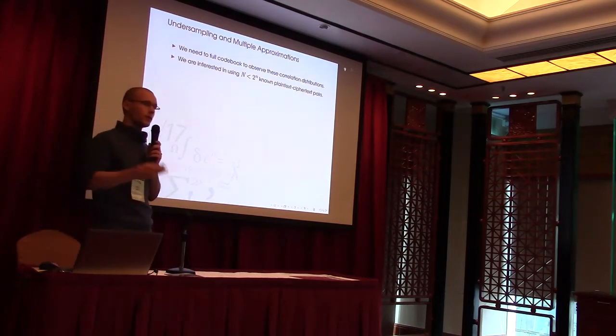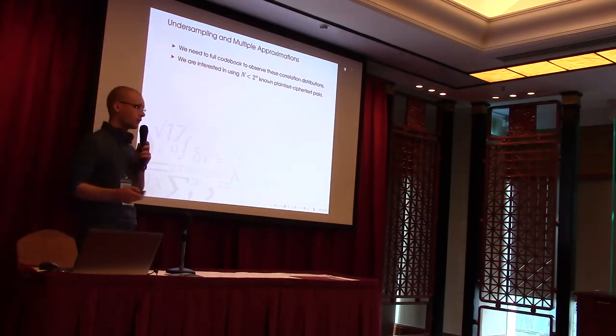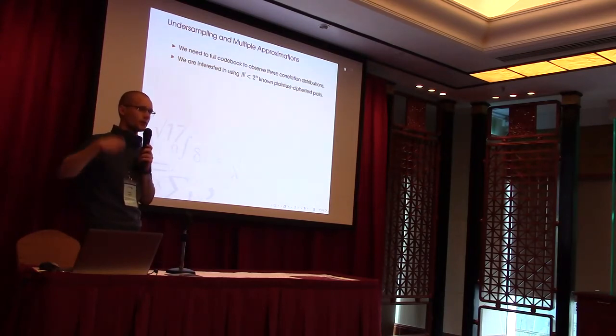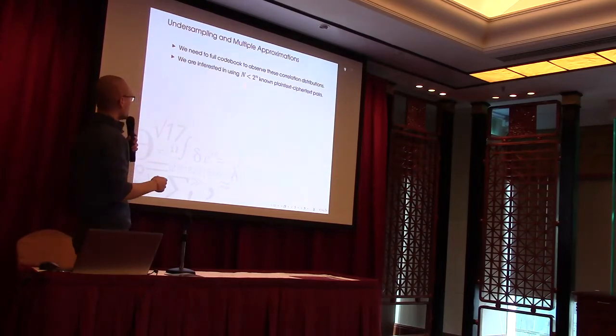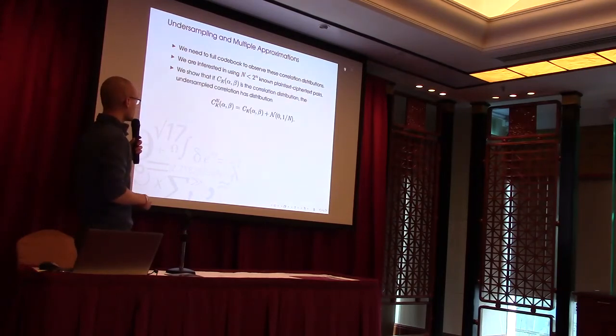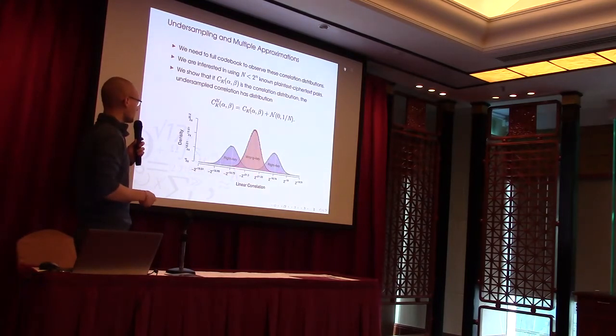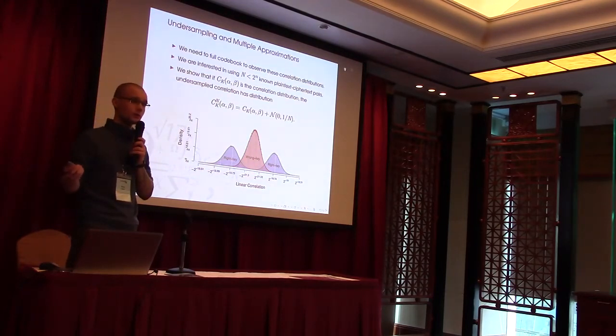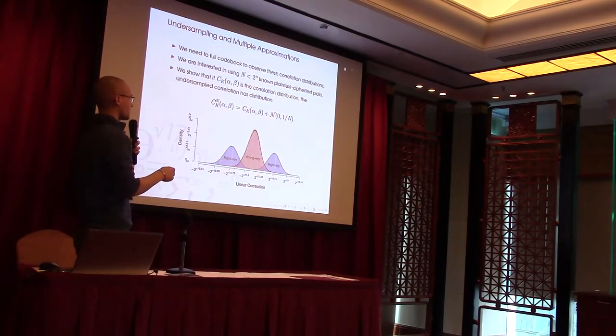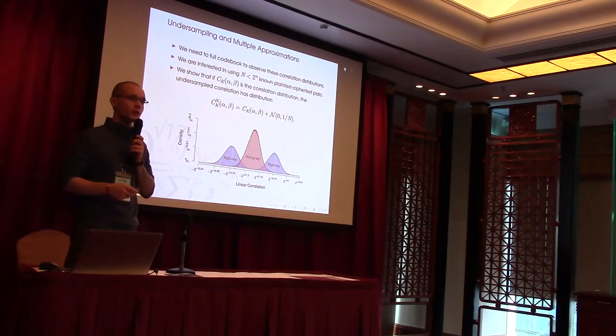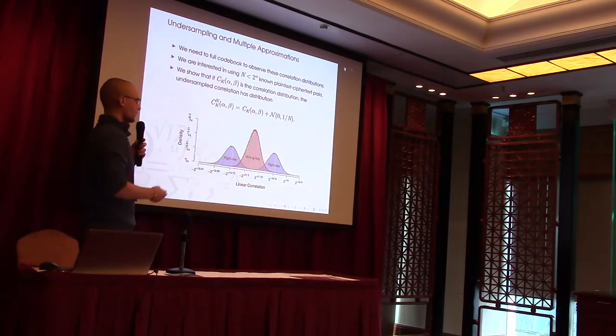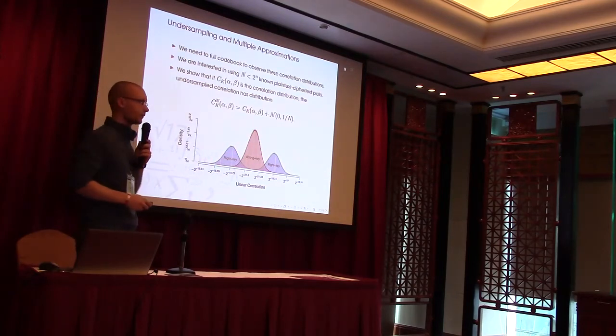Now we have a model for the right key and the wrong key. But in most cases we're not interested in actually sampling the whole code book. We want to only use a small part or a relatively small part of the code book. And if we do this we can show that we just need to add this normal distribution with a variance 1 over n. Then we get to our actual undersampled distribution, and that looks something like this. You kind of lose all this weird structure that we've been seeing. This is very close to the model that Matsui actually uses. But I want to stress that this only works if your n is quite a bit smaller than your code book size. So if you have these very marginal attacks then you should be careful about how these distributions actually look.